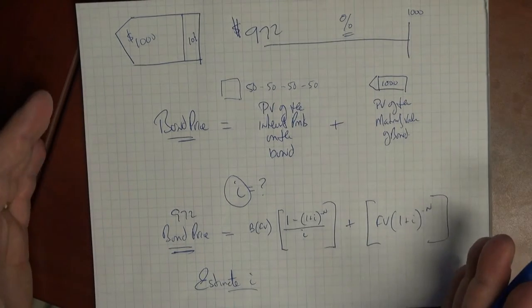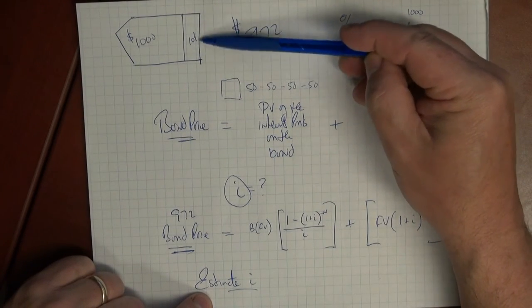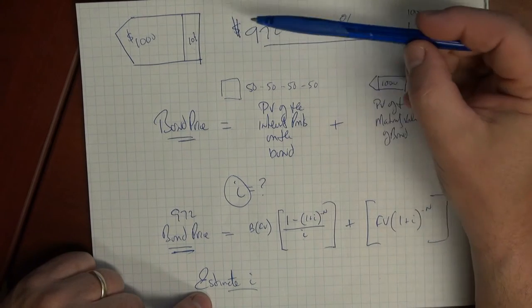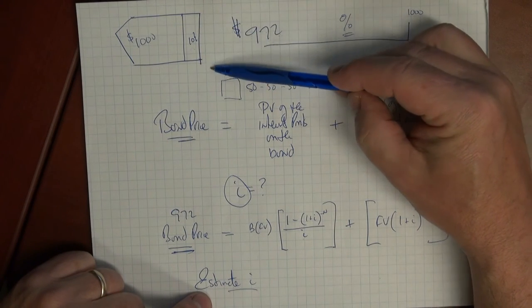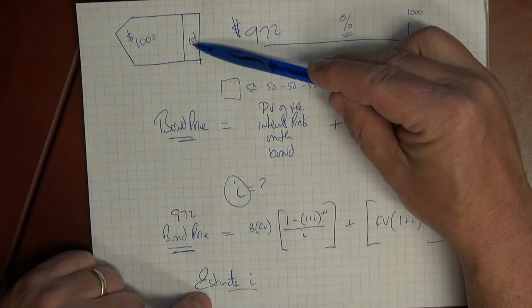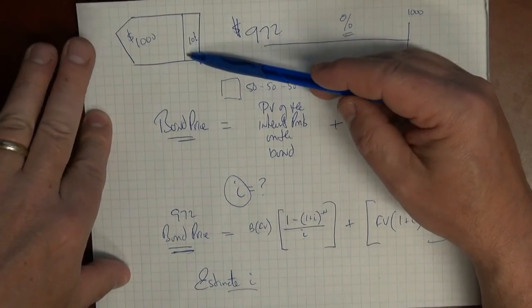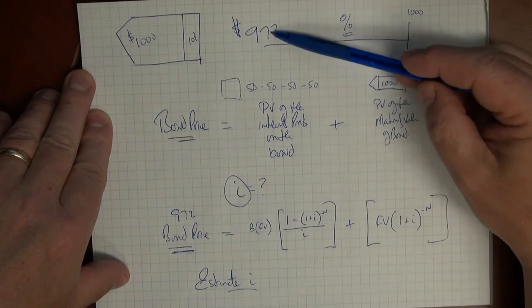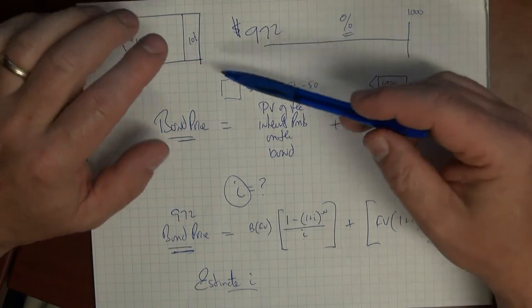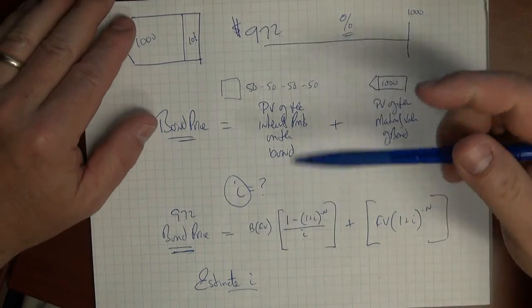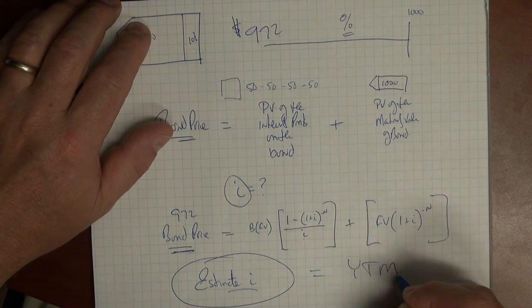So we plug in an estimate of i. And how can you estimate i? You're going to say, well, gee, that could be any number from here to the sun. Well, it's not really. We know, for example, that the interest rate on the coupon was 10%. We also know that it sold for 972. So we have an idea that the interest rate out there in the world, in the market is a little above 10%, just a little, maybe 11%. So we can plug in 11 here. We know it's nowhere below 10. So it's not that much higher than 10, because it's only $28 off. So we can plug in, we could try, say, 11%. We could try 12%. And we'll narrow it down based on that. So that's the idea behind this estimation of yield to maturity is you estimate the i, and that will give us the effective yield to maturity.